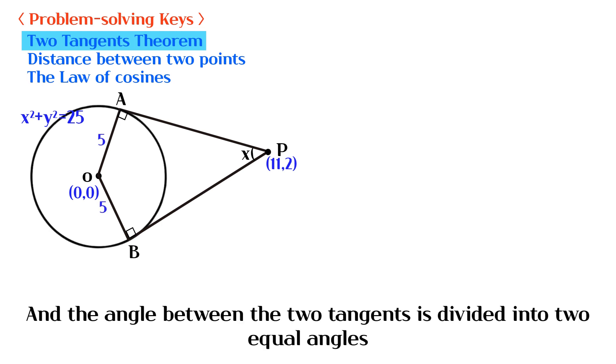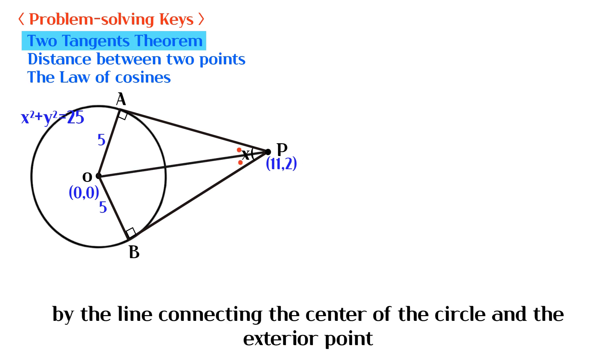And the angle between the two tangents is divided into two equal angles by the line connecting the center of the circle and the exterior point.